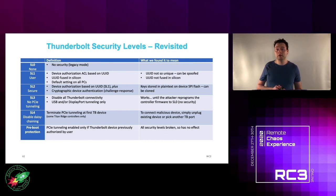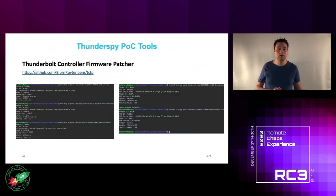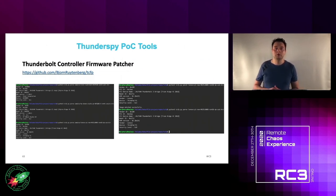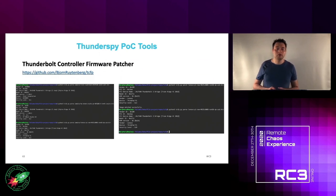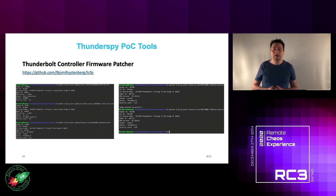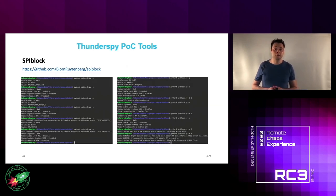If you're feeling adventurous, you can try these tools yourself — they've been published on my GitHub repo. The first is the Thunderbolt Controller Firmware Patcher. The second is called SpyBlock, which lets you configure SPI flash write protection.